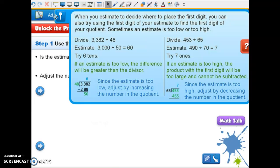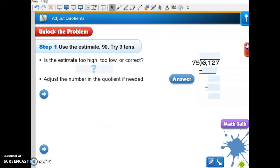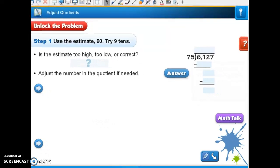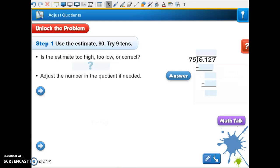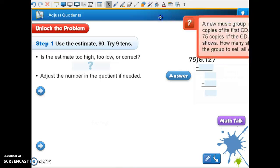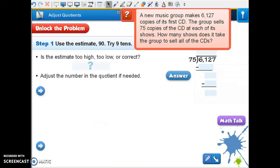Okay, here we go. We're going to look at what they want us to do. The new music group makes 6,127 copies of its first CD. The group sells 75 copies of the CD at each of its shows. How many shows does it take the group to sell all of the CDs?